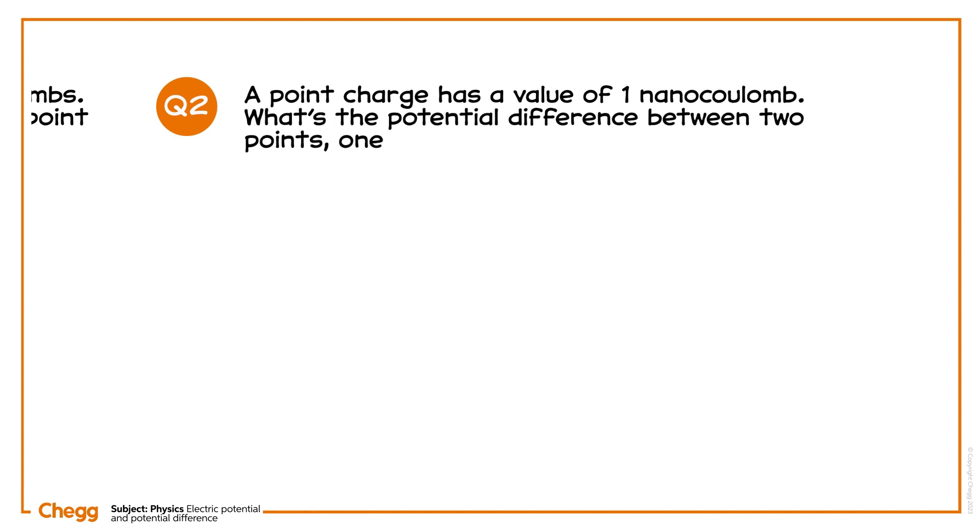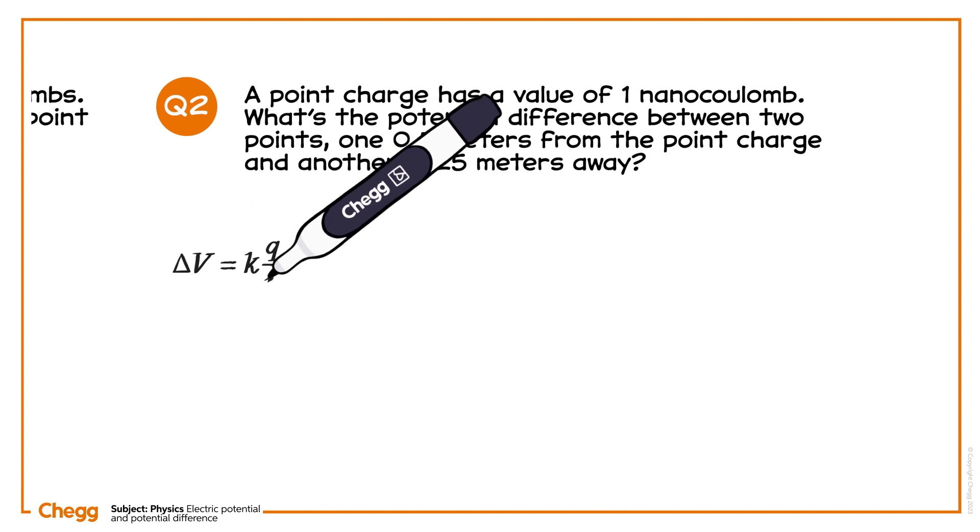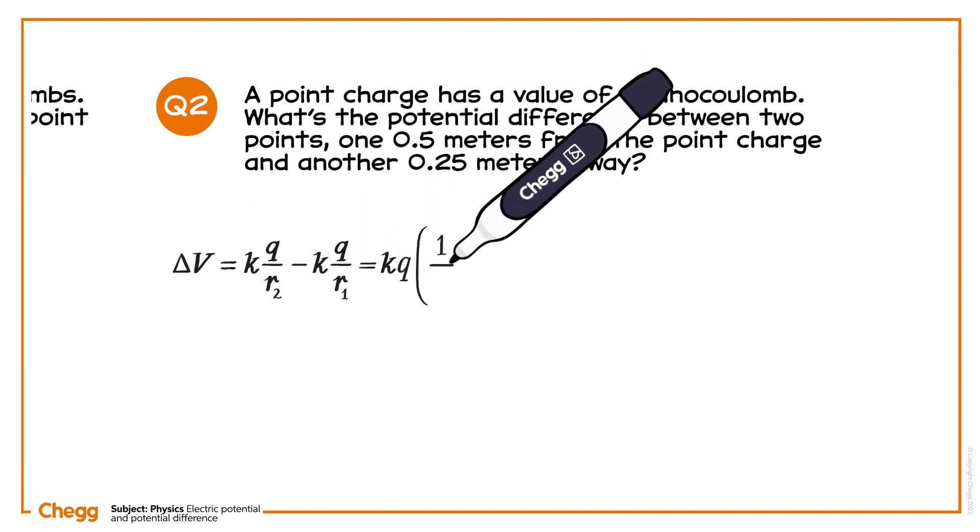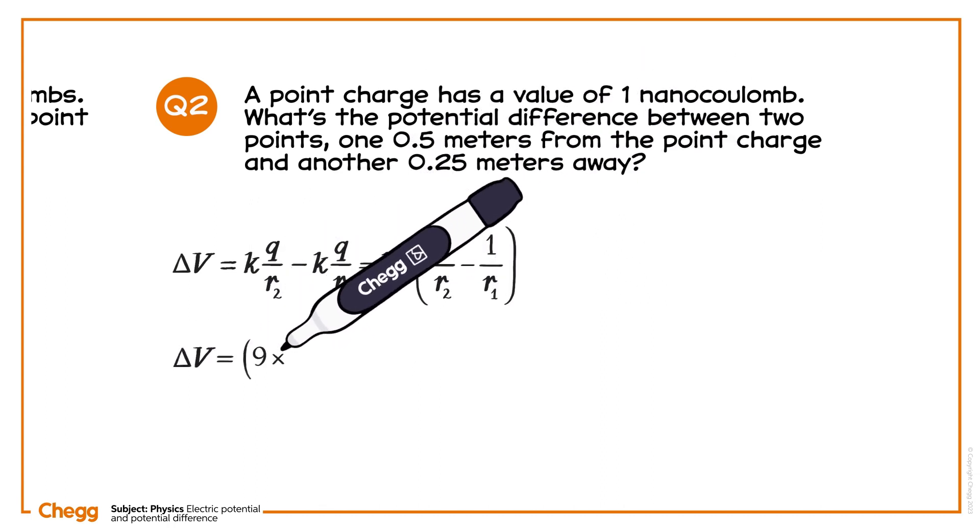Question two. A point charge has a value of one nanocoulomb. What's the potential difference between two points? One 0.5 meters from the point charge, and another 0.25 meters away. We'll need this formula from earlier to calculate the potential difference between the two points.